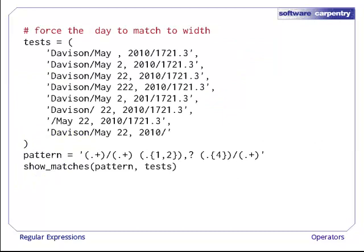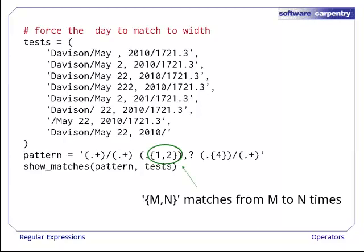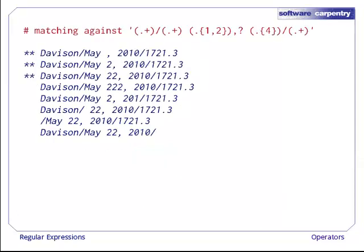Let's do a few more tests. Here are some records in which the dates are either correct or mangled. Here's a pattern that should match all of the records that are correct, but fail to match all of the records that have been mangled. We are expecting four digits for the year, and we're allowing one or two digits for the day. The expression curly braces {m,n} matches a pattern from m to n times. When we run this pattern against our test data, we see that three records match.